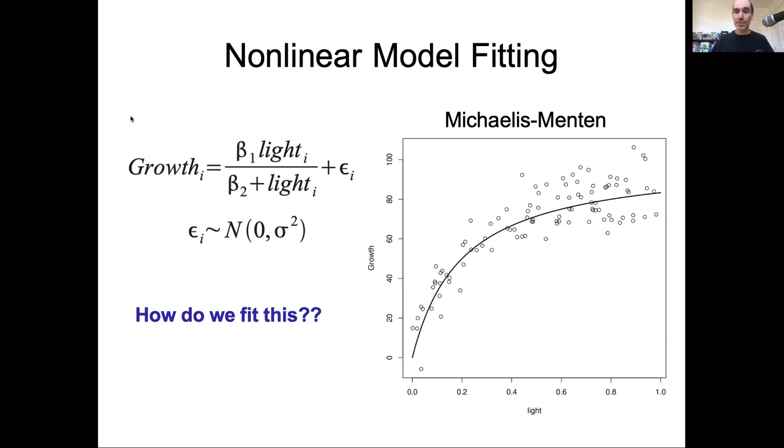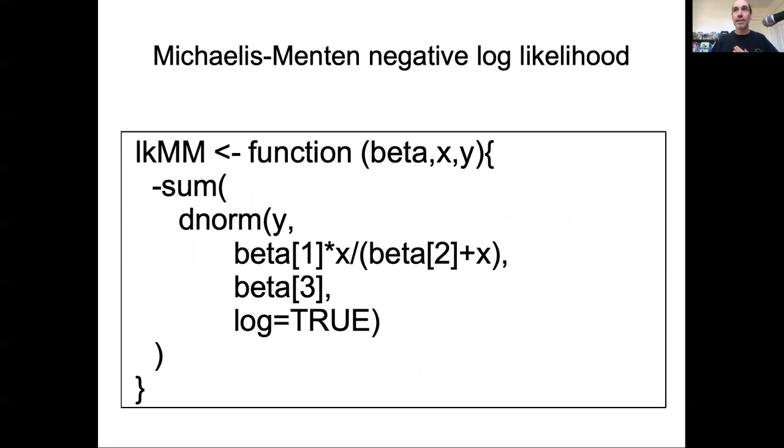So how do we do this? So as before, the first step is to write down our likelihood and take the logs, and again, we're going to do that using code. So here's an example of writing down this Michaelis-Menten likelihood as a negative log likelihood. So remember, we give it a name. We're going to pass in our vector of all of our parameters. We're going to pass in all of our data. Here we need both an x and a y.